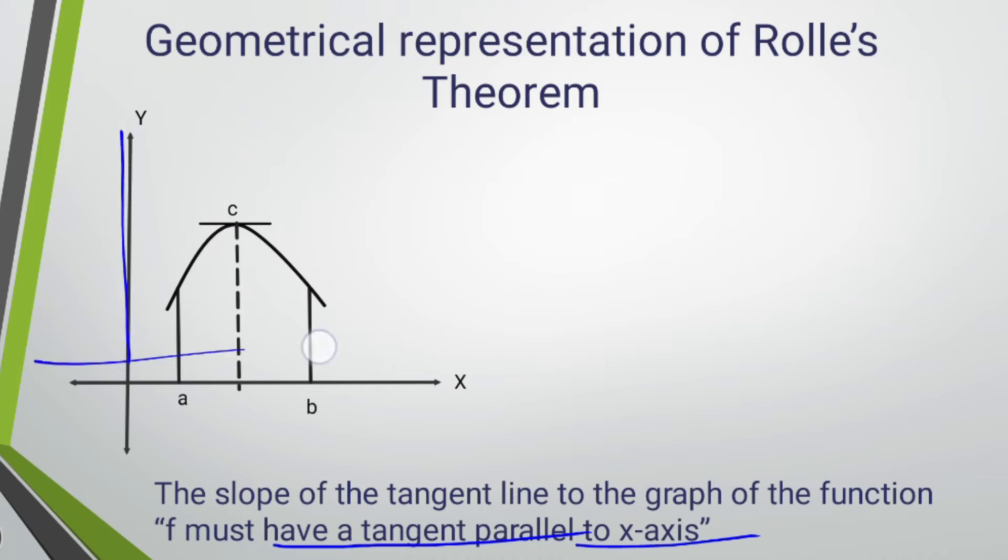For example, this is our curve and there exist two points a and b, and it has a tangent at point c. Then this f must have a tangent parallel to the x-axis, meaning when the slope is 0.